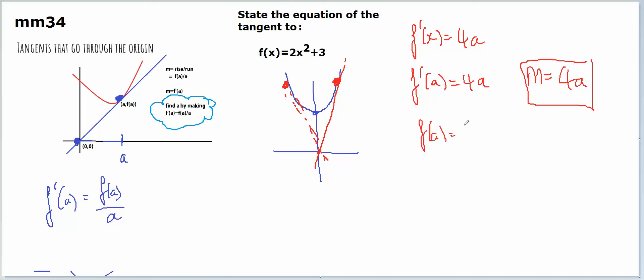f of a is 2a squared plus 3. So the gradient of the tangent is also rise over run, which is f of a on a, which is 2a squared plus 3 on a. So I know that 4a equals 2a squared plus 3 on a. Move the a over, 4a squared equals 2a squared plus 3. 2a squared equals 3.